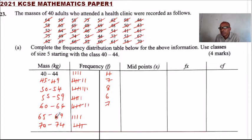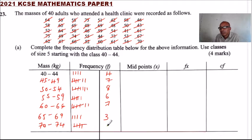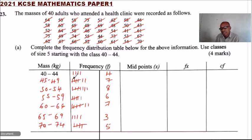For 65 to 69 we have 3. And finally for 70 to 74 we have 5. Those are the frequencies. This method makes it easier for you to identify the frequency.